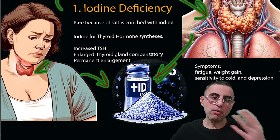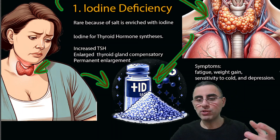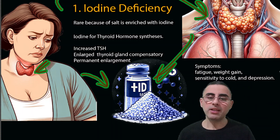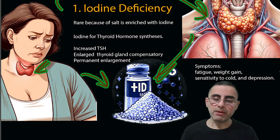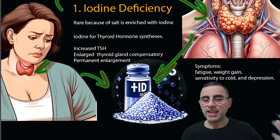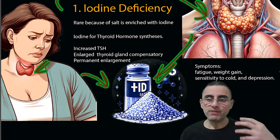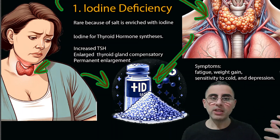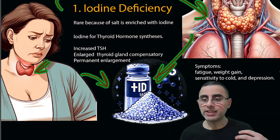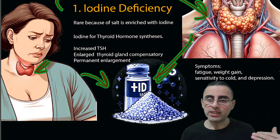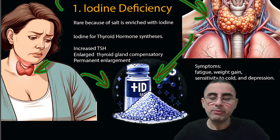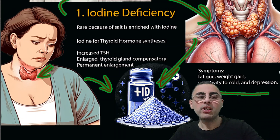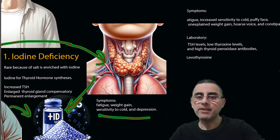Thyroid hormones are important for metabolism, and when thyroid hormone levels are low, metabolism slows and weight gain is common. Sensitivity to cold — cold intolerance — is also a symptom. Some people also have depression. So weight gain, depression, and weakness are common characteristics of iodine deficiency.